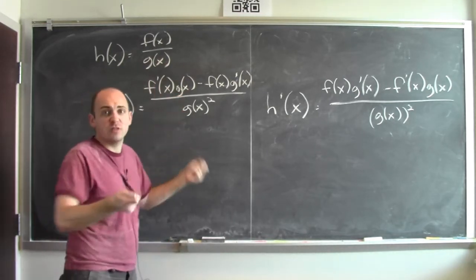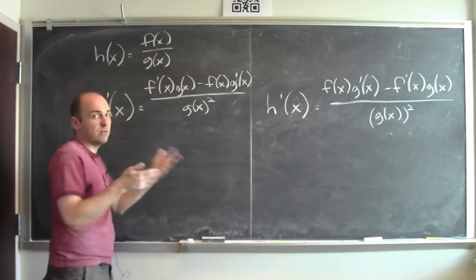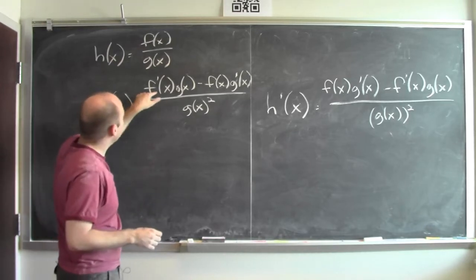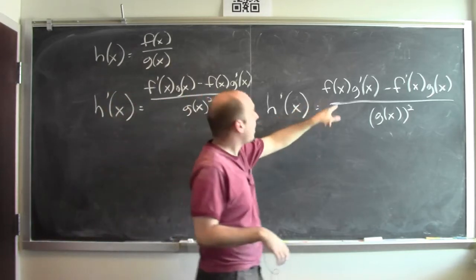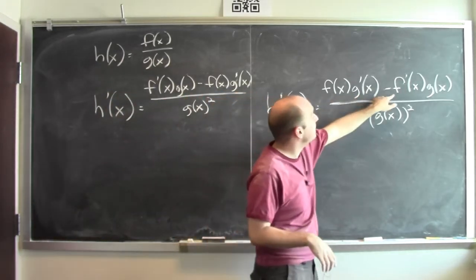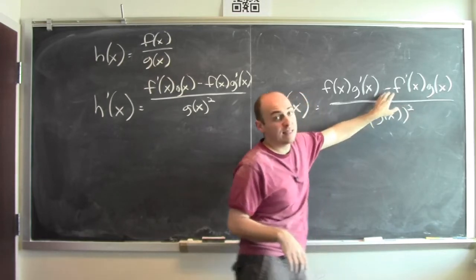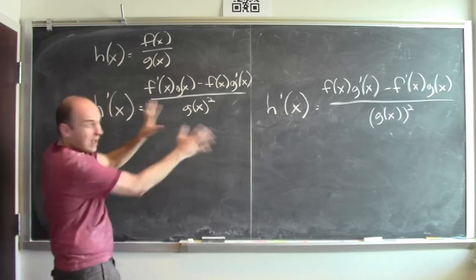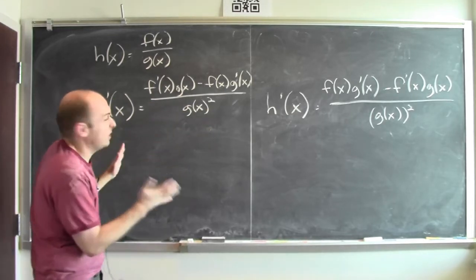I'm multiplying together the numerator and denominator and their derivatives. But notice what's different. Here I've got f'g minus fg'. Here I've got fg' minus f'g. The f'g comes with a minus sign here, and here the fg' is coming with a minus sign. So they're not the same expression. But how do you know which one is really the quotient rule?